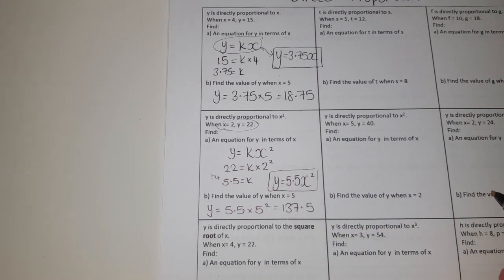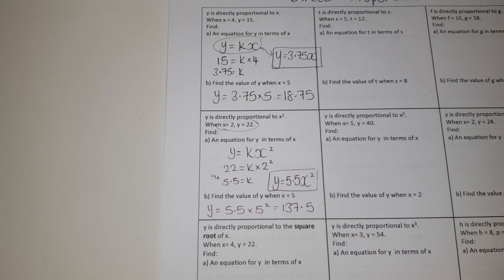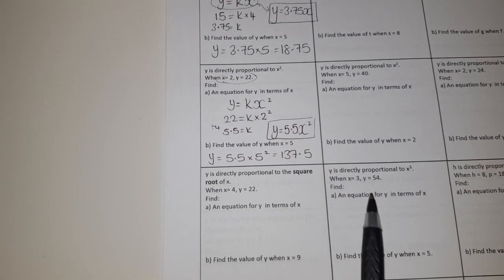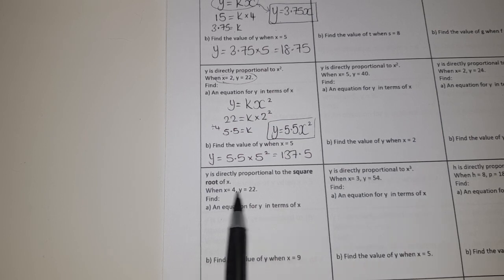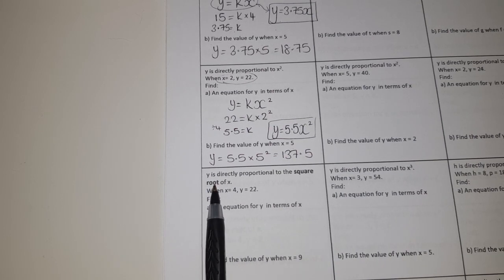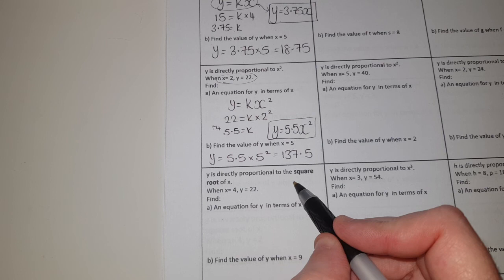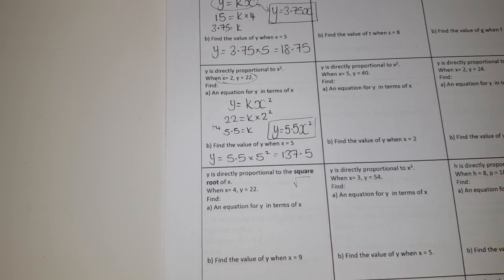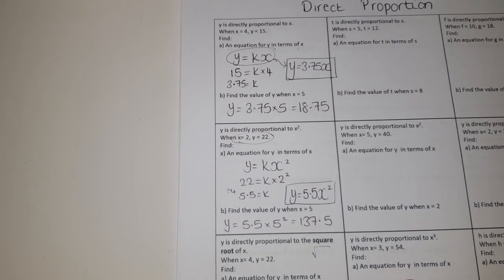Direct proportion where you've got a squared in. Just be very careful to read the wording. On this one you've got that it's directly proportional to x cubed. On this one it's the square root of x, so that's the one inside the square root sign. But everything else you should now be able to have a go at from those two examples.